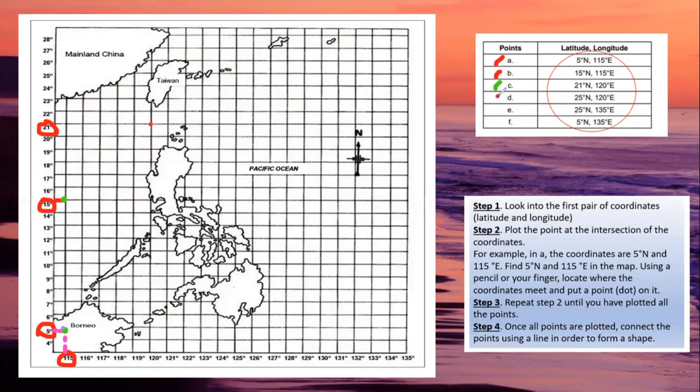So once you are done, when you finish all of this, say up to F, what you will do next is to connect the lines. Connect the dots. So you will be getting your PAR or the Philippine Area of Responsibility. So what you do is from point A to point B. There, connect it. Then from B to C. Connect it.